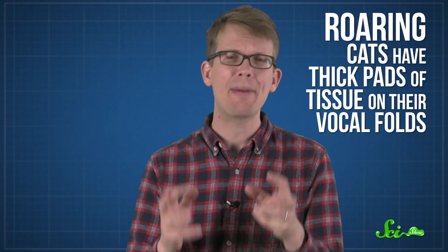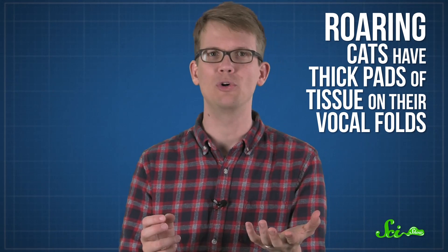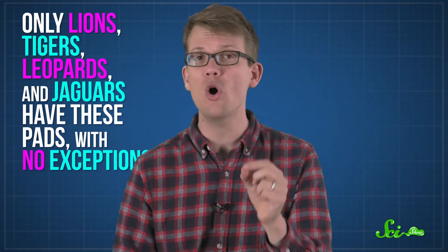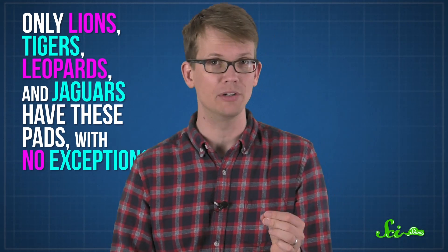That was when researchers realized that there is another difference between cats that can roar and cats that can't. Roaring cats have thick pads of tissue in their vocal folds. The pads make their vocal folds longer and heavier, which allows them to vibrate slowly and make a lower-pitched sound. Only lions, tigers, leopards, and jaguars have these pads, with no exceptions, not even snow leopards.